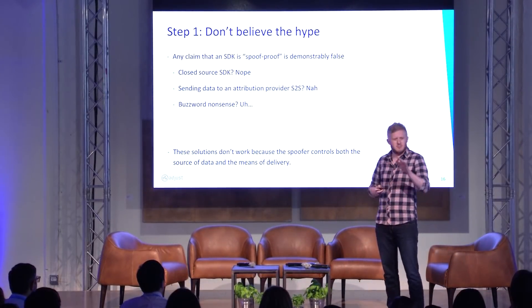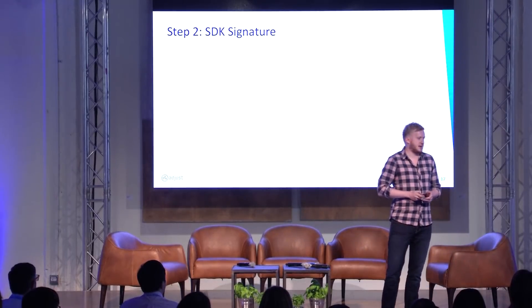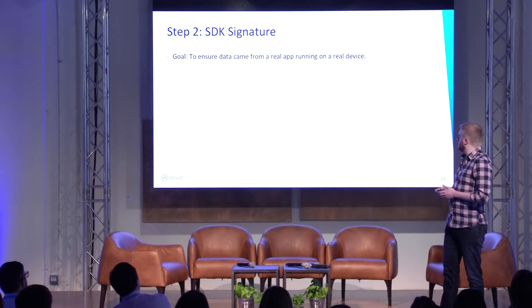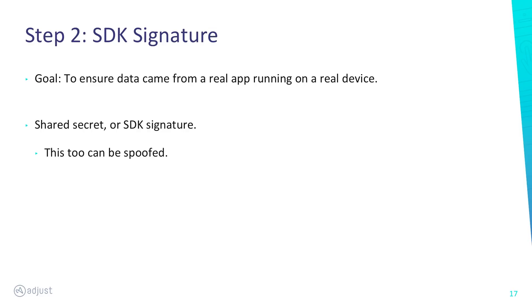So what do we do instead? The answer is — you've probably heard of this before — an SDK signature. An SDK signature essentially solves the following goal: to ensure the data came from a real app running on a real device — in other words, it hasn't been fabricated. The way that SDK signatures work is they create a secret that the beginning of the chain, the device, and the end of the chain, the server, know — but the delivery guy in the middle doesn't know. However, some smart people in here are going to say: can't that be spoofed? The answer is actually yes. You cannot create a theoretically unspoofable SDK — it is impossible.